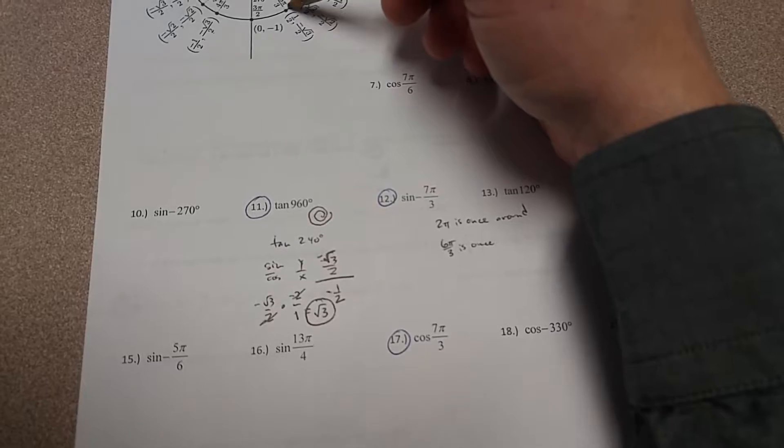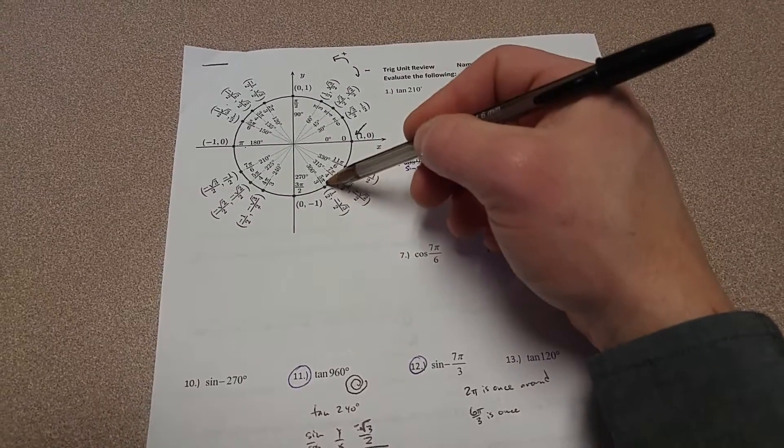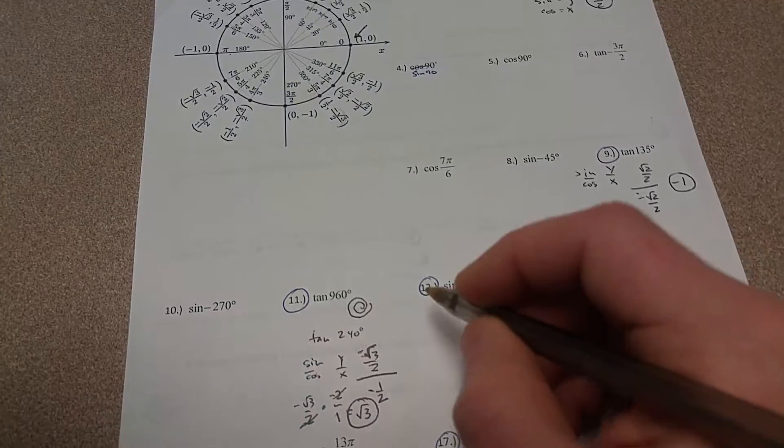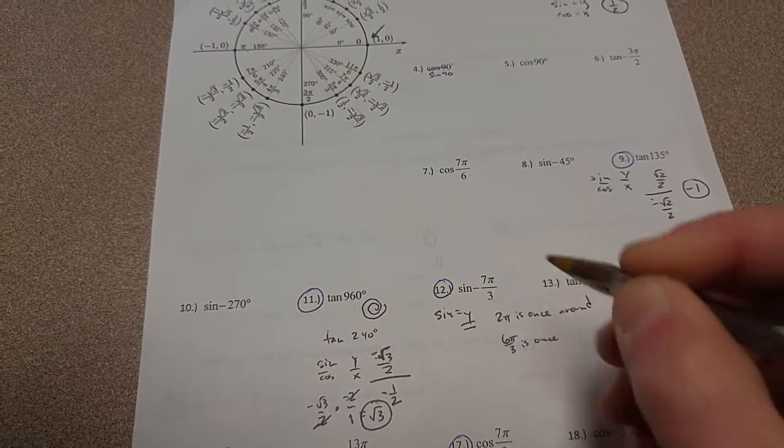And so if I'm looking for the sine, I'm looking for the y coordinate right here, which you can see is going to be negative root 3 over 2. So remember, sine is the y coordinate.